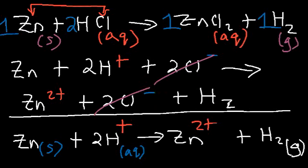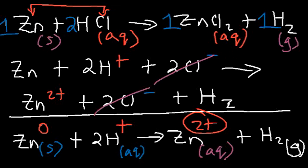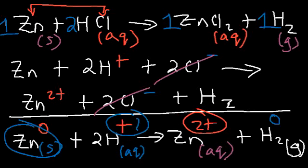Hydrogen gas is in the gaseous phase and zinc is in the aqueous phase as the zinc 2+ ion. Zinc was oxidized — its oxidation state increased from zero to two, meaning it lost electrons. The oxidation state for any pure element is always zero. Hydrogen went from one to zero, so hydrogen was reduced; its oxidation number decreased, meaning hydrogen gained electrons. Zinc metal is the reducing agent and the H+ ion is the oxidizing agent.